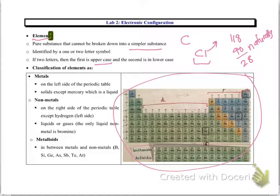If you look at this particular color-coded periodic table here, the elements in the periodic table are divided into three categories.